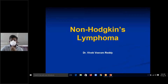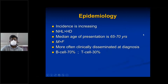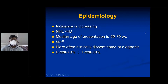NHL is more common than Hodgkin's lymphoma because it contains more subtypes. Overall, NHL is more common than Hodgkin's lymphoma and has worse prognosis. Epidemiology: incidence is increasing. NHL is greater than HD, Hodgkin's disease. The median age of presentation is 65 to 70 years, so this is a disease of the elderly. Males are more affected — there is male predominance.